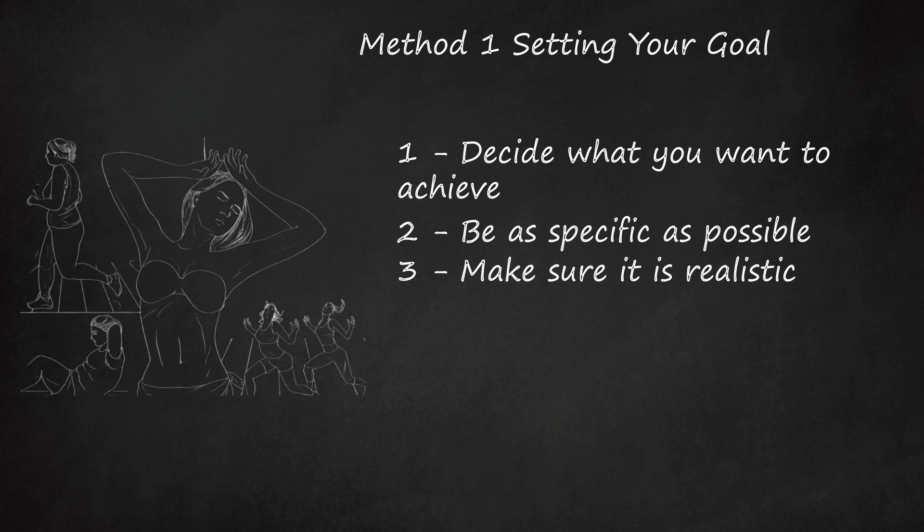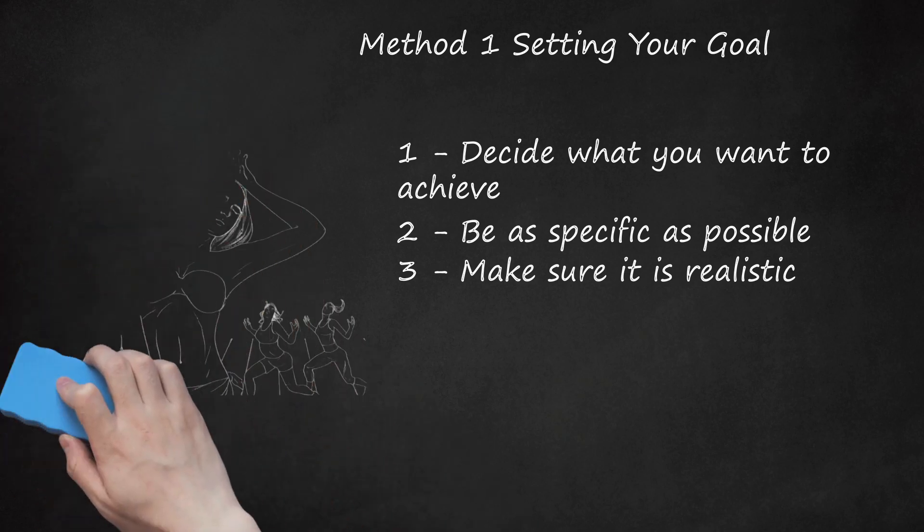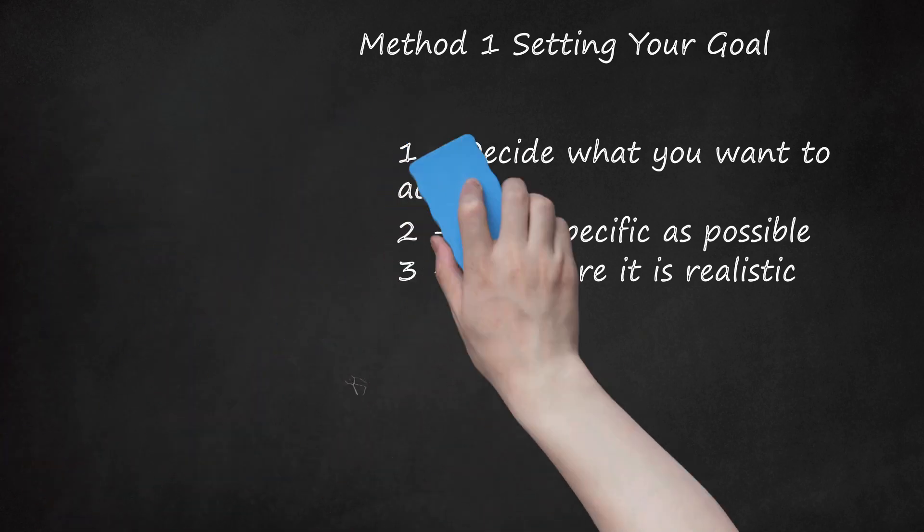For example, imagine you set a goal to read 30 academic books cover to cover in 16 weeks. That goal would be very hard to achieve and might not be realistic. You might think that setting the bar so high will encourage you to work harder. But if you get to week 8 and have only read 9 books instead of 15, this could lead to discouragement rather than inspiration.